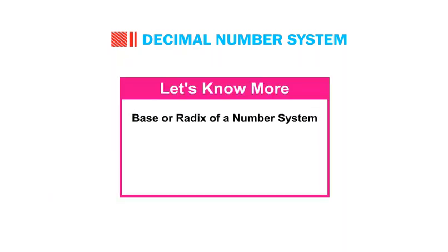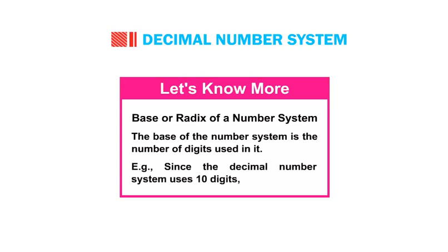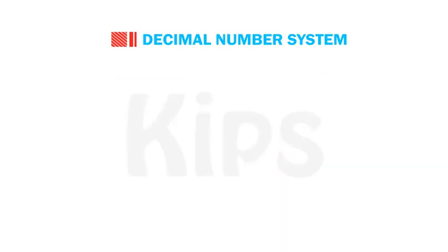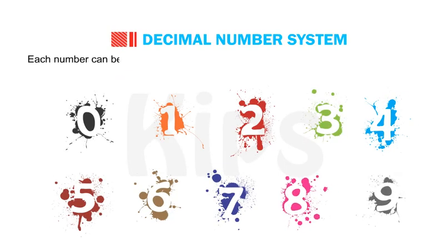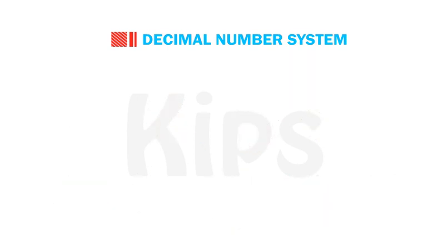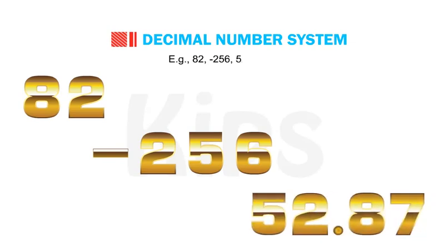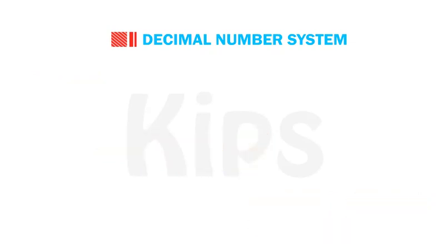The base of the number system is the number of digits used in it. For example, since the decimal number system uses 10 digits, its base is 10. Each digit can be used individually or they can be grouped to form a numeric value — for example, 82, 256, 52.87, etc.